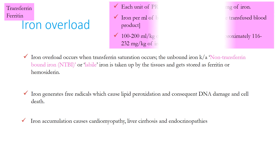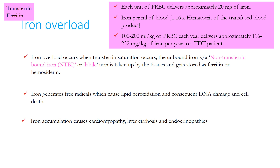Each unit of PRBC delivers approximately 200 mg of iron. Iron per ml of blood can be calculated by the formula: 1.16 × hematocrit of the blood product being transfused. A 100–200 ml/kg per year of PRBC transfusion delivers approximately 116–232 mg/kg of iron per year to a transfusion-dependent thalassemic patient.